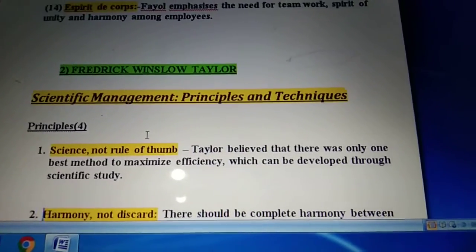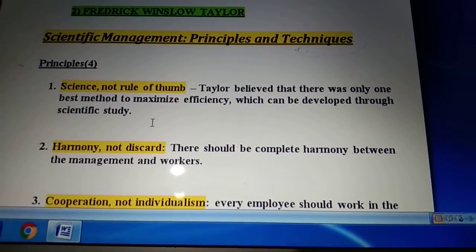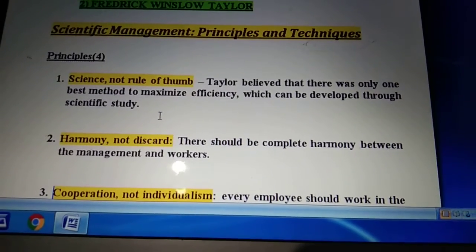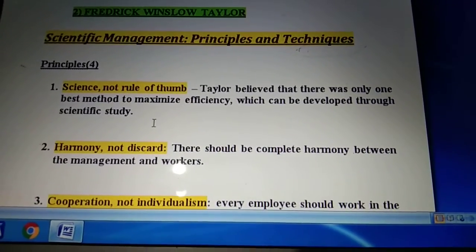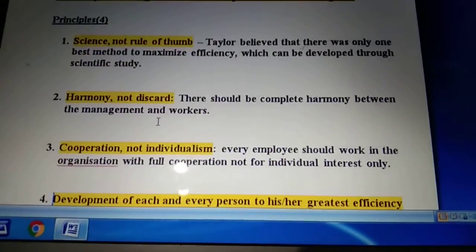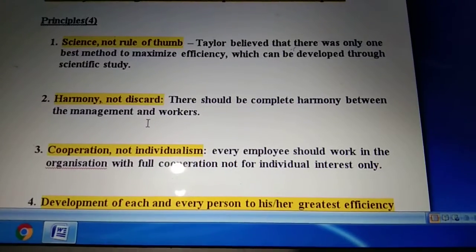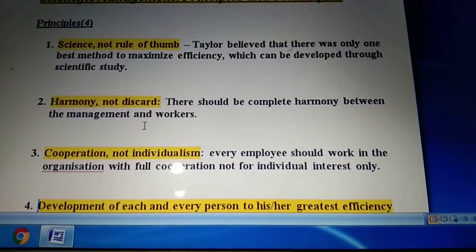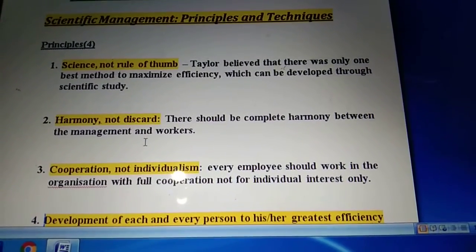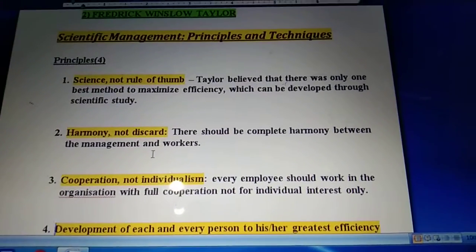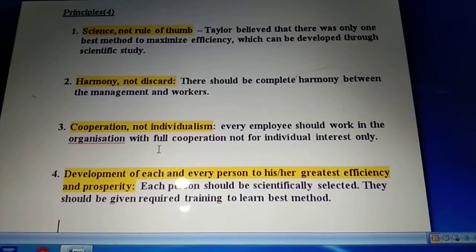The next principle is harmony, not discord. There should be complete harmony between management and workers, because if there is no harmony, they will not work as a team and the organizational objective will never be achieved. The next principle is cooperation, not individualism. This says every employee should work in the organization with full cooperation, not for individual interest. There should be proper cooperation between employees and the organization, and employees should give their full potential so the objective of the organization can be achieved.